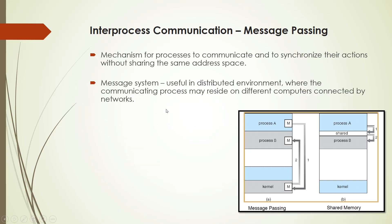Message passing systems are useful in a distributed environment where the communicating processes may reside on different computers connected by networks. For example, process A is in system 1 and process B is in system 2, and both systems are connected through a network, so the processes use the network for communication.